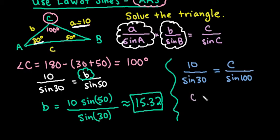Alright, so let's set this up. C is equal to 10 times sin(100) divided by sin(30). And make sure that when you put it into your calculator that you close the parentheses behind the 100.